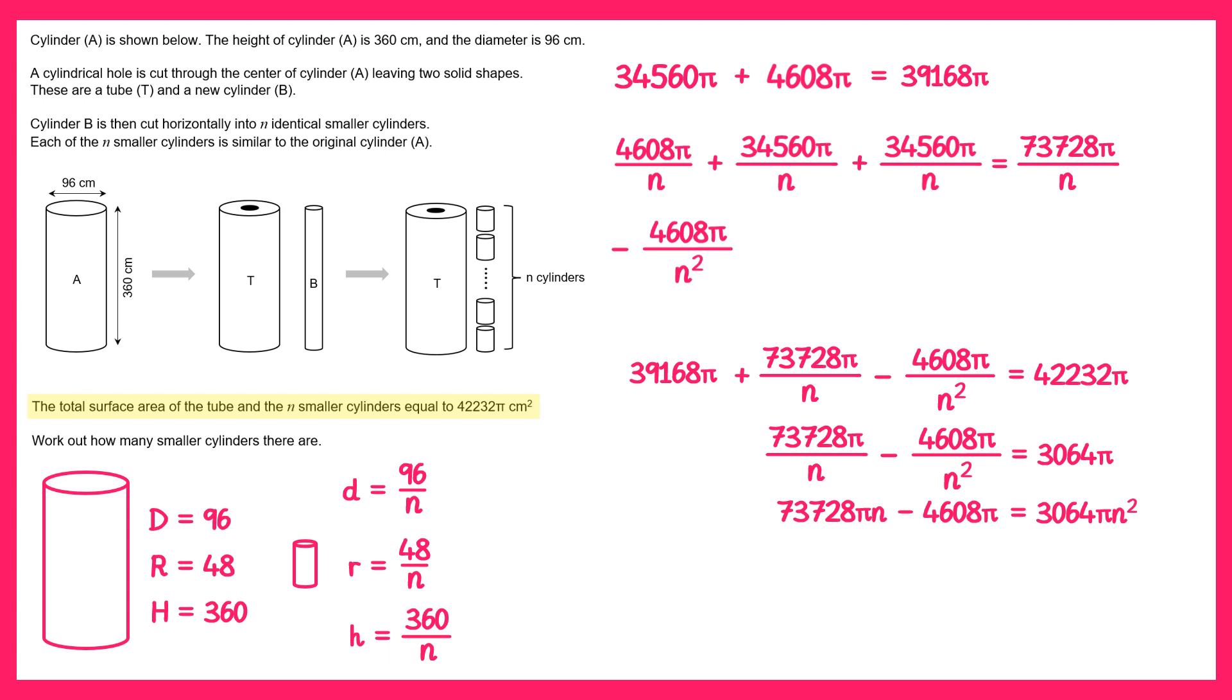At this point we probably divide through by pi on both sides, and then we could get all of the terms on one side, and you'd end up with this quadratic. Now this is not the nicest quadratic in the world, but you were allowed a calculator for this question, so if you use your calculator you'll get two solutions, which are n equals 24, or n equals this. Now since n is an integer, it's the number of cylinders we get, it can't be the second one, so we'll lose that, and the answer to the question is n equals 24.